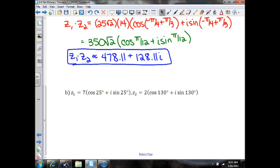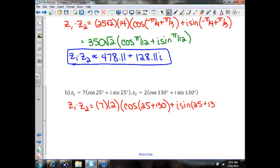For example B, we're going to do the same stuff. Z1 times Z2 will equal 7 times 2 times the cosine of 25 plus 130 plus i sine of 25 plus 130. So what we're going to have then, we're going to have 14 times the cosine of 155 degrees plus i sine of 155 degrees.